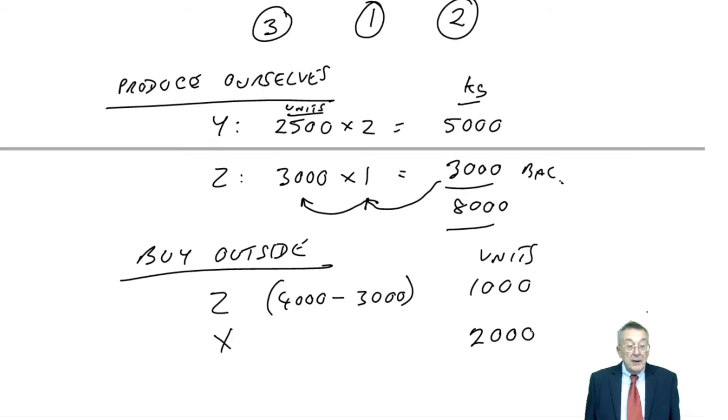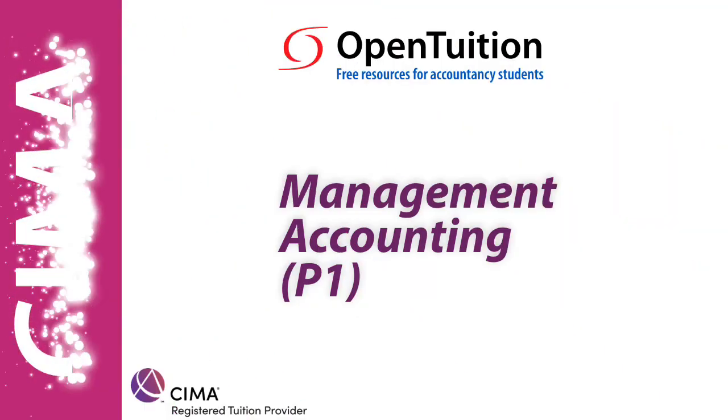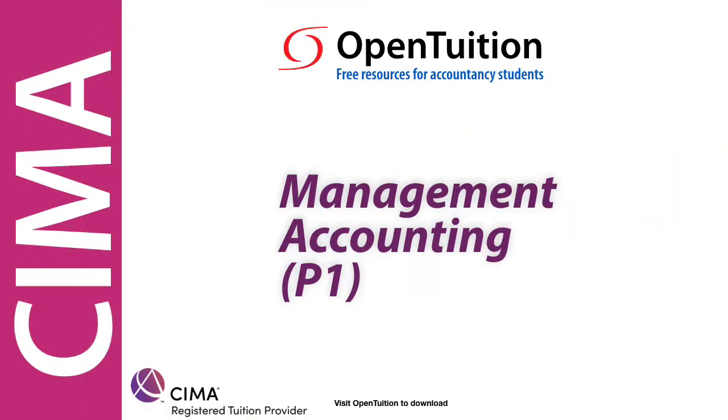So, there's how many we should make and how many units we should buy. That is, obviously, rather different from pure relevant costing. It's more a limiting factor problem. The same chapter as throughput accounting. That was chapter 12. One more chapter, and then we've completed the syllabus.